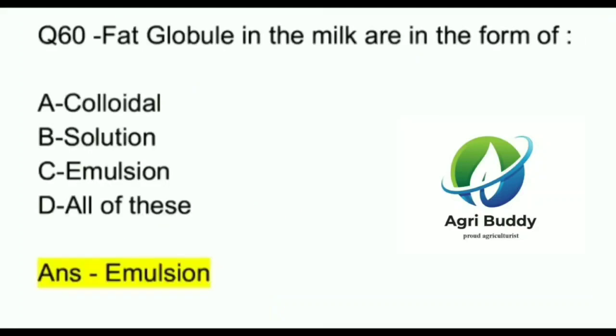Question 60. Fat globules in milk are in the form of? A. Colloidal. B. Solution. C. Emulsion. D. All of these. And the answer is Emulsion.